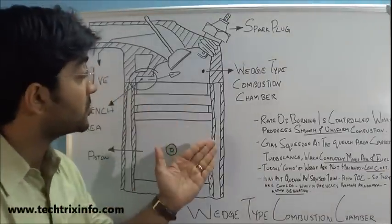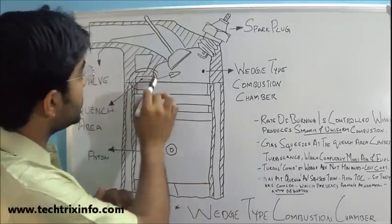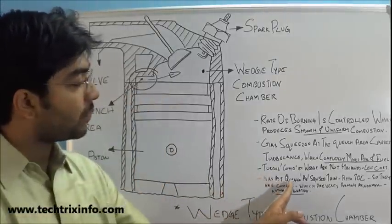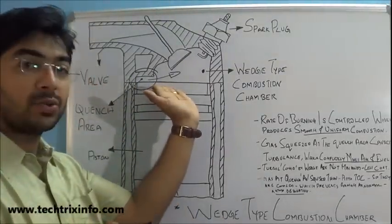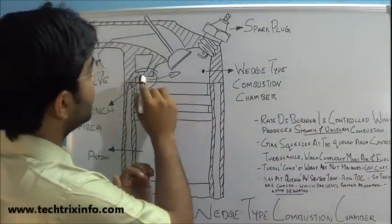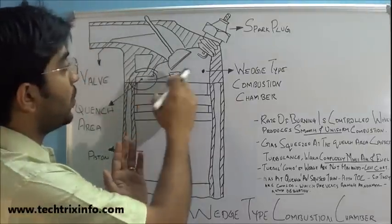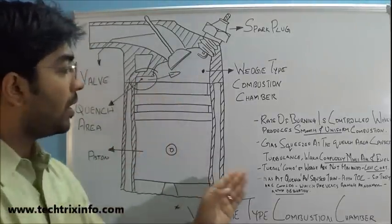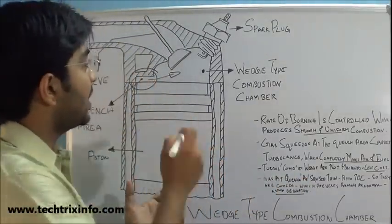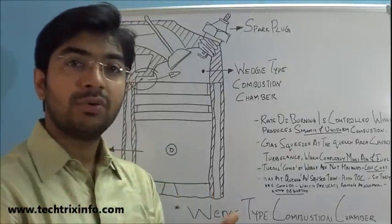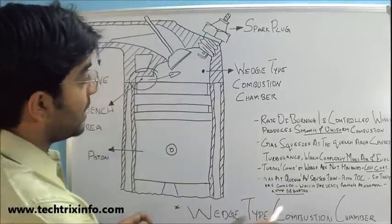Finally, the wet state combustion chamber avoids detonation. The quench area is very thin, so the gases are quenched or squeezed very thin at this area. When the piston is at the top dead center, the air is actually getting cooled at this area because of the area difference in the wet shape and quench area. This prevents the abnormal burning of the gas during combustion, so detonation is avoided.